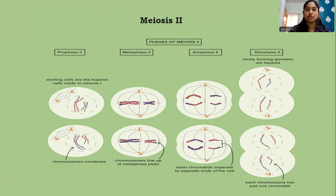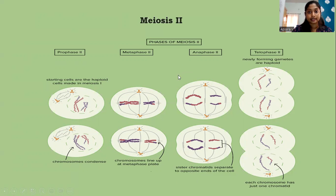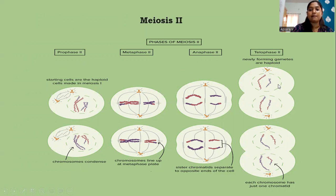Meiosis two consists of four phases: prophase two, metaphase two, anaphase two, and telophase two. In prophase two, the starting cells are haploid as a result of meiosis one, and the chromosomes condense. In metaphase two, chromosomes line up at the metaphase plate again. In anaphase two, the sister chromatids — which were still together after meiosis one — now separate to opposite ends of the cell. In telophase two, the newly formed gametes are haploid, with each chromosome having just one chromatid.